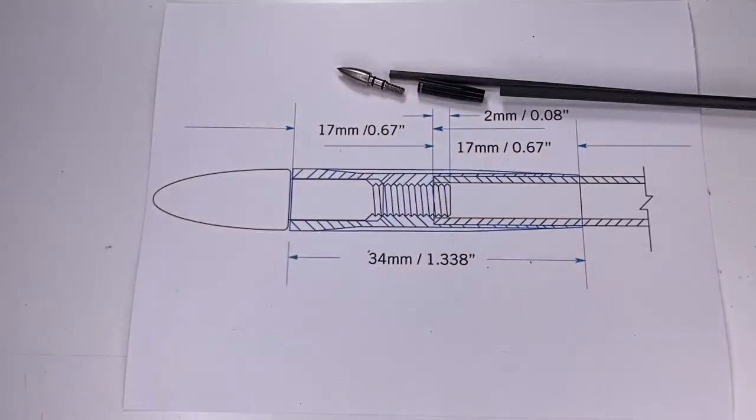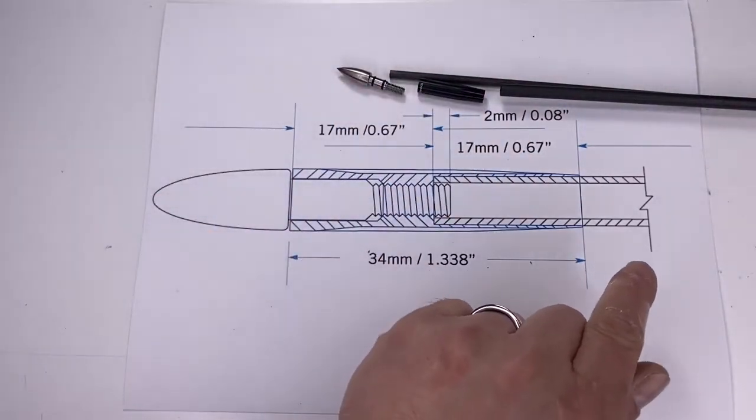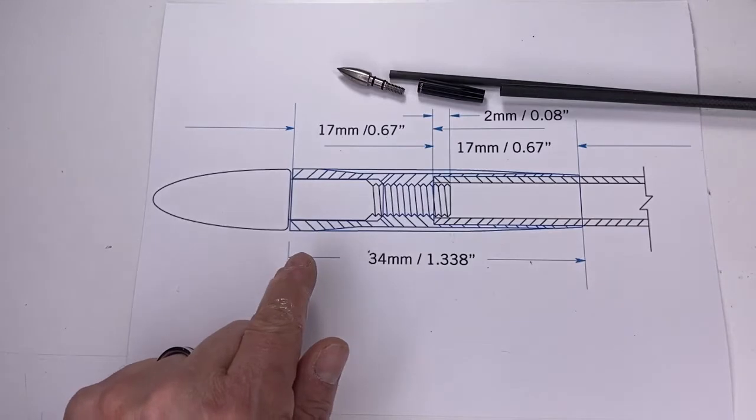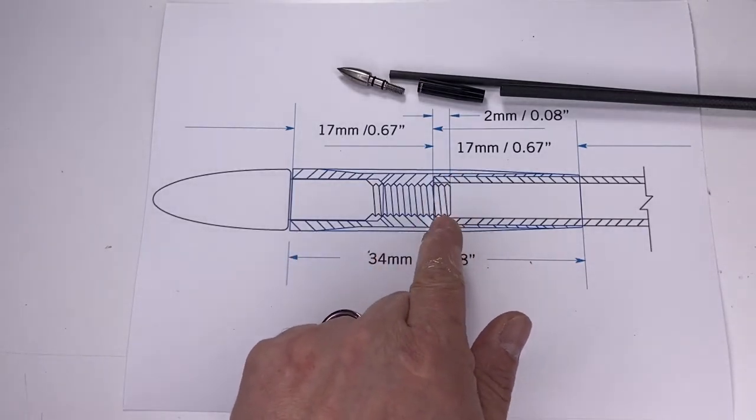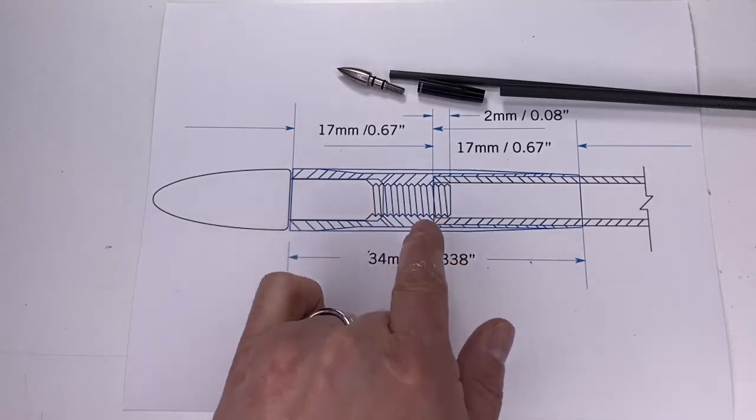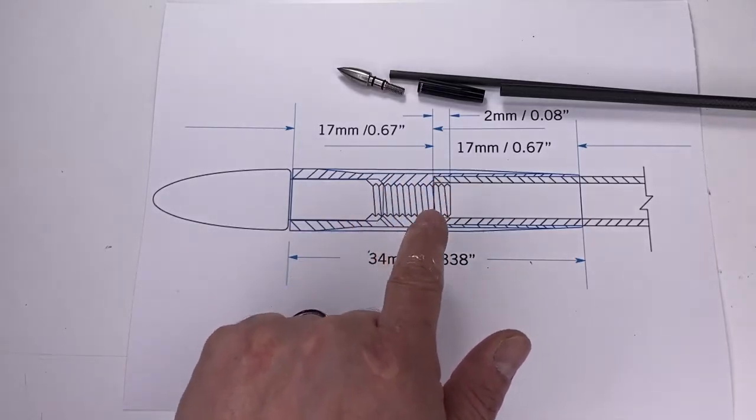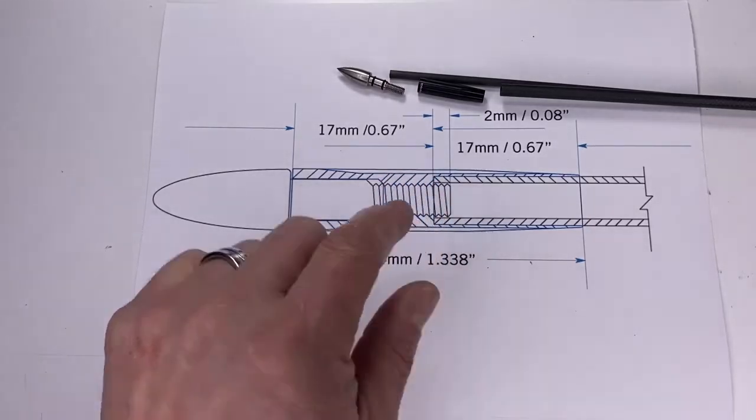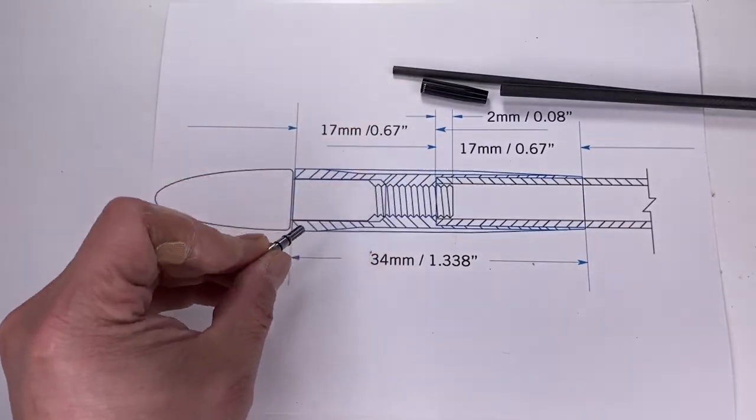Before we do that, we need to look at the design of the Arrow Outsert. Right off the bat, I want to point out that the Arrow Outsert itself is 34 millimeters long. At the end of the thread is 17 millimeters. The front of the arrow, this section, is 11 and a half. That means the entire portion of the threading is only 5.5 millimeters. When you look at the field point, you can see that about this much is sticking into the shaft.